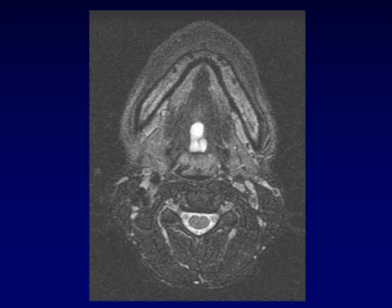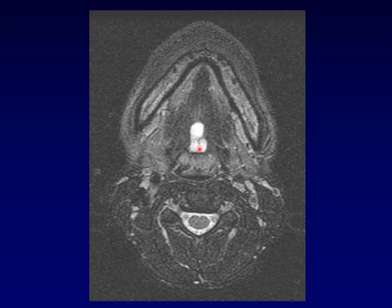This T2-weighted image shows a less classic but still very familiar version of a thyroglossal duct cyst. This isn't down in the strap muscles — we are way up at the base of the tongue. This is the location of the foramen cecum, and so a cystic mass in the posterior tongue is most likely going to be a thyroglossal duct cyst.